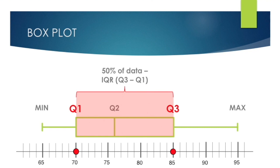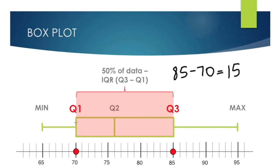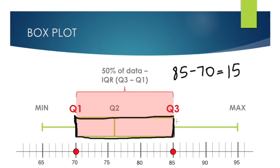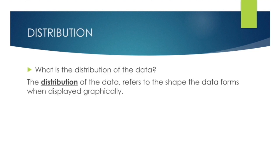Notice that the box represents two quarters, so that's 50% of the data. This is referred to as the IQR, or interquartile range — the spread of the middle 50%. In this case, it's the third quartile (85) minus the first quartile (70), which gives us 15 units. The bigger this number, the bigger the variability or spread of the data.